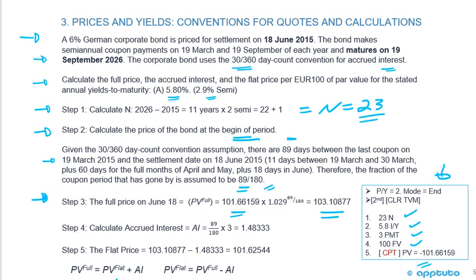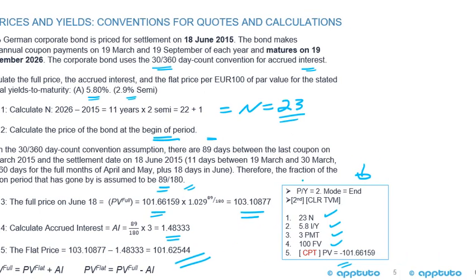Remember: full price = flat price + accrued interest, so flat price = full price − accrued interest. The accrued interest is (89/180) × 3 = 1.48333. Therefore, the flat price is 103.10877 − 1.48333 = 101.62544.